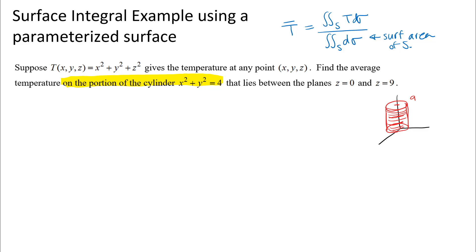The issue here is that there is no coordinate plane where I have a one-to-one projection of this surface. If you project this surface down into the xy plane, you would just end up with the circle — the circle of radius two — and every single point that lies above that circle would end up projected down to that same point, so that would be an infinity-to-one projection. If you try to project into either the yz plane or the xz plane, you end up with a rectangle region, but that would be a two-to-one projection: a point on the front side of the cylinder and a point on the back side would map to the same point in that rectangle.